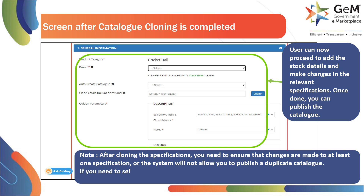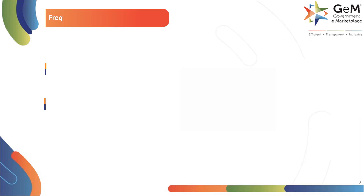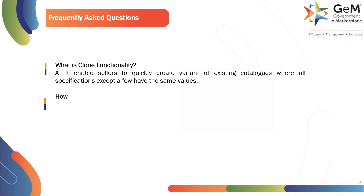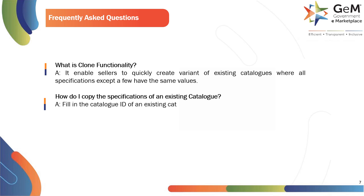If you need to sell an existing product, you should use the catalog pair functionality instead. Here are the frequently asked questions. What is clone functionality? It enables sellers to quickly create a variant of existing catalogs where all specifications except a few have the same values. How do I copy the specifications of an existing catalog? Fill in the catalog ID of an existing catalog from the same category against the clone catalog specification tab.